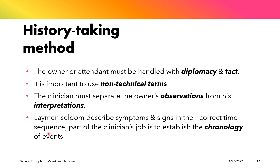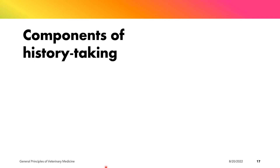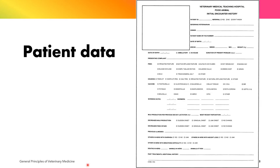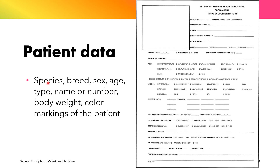Another important point is that laymen seldom describe symptoms and signs in their correct time sequence, and part of the clinician's job is to establish the chronology of events. The important components of history-taking are patient data, history of the disease, and history of the management of that particular farm. Under patient data, we have the species of the animal, breed, sex, age, type of animal, name or number, body weight, and color markings of the patient.